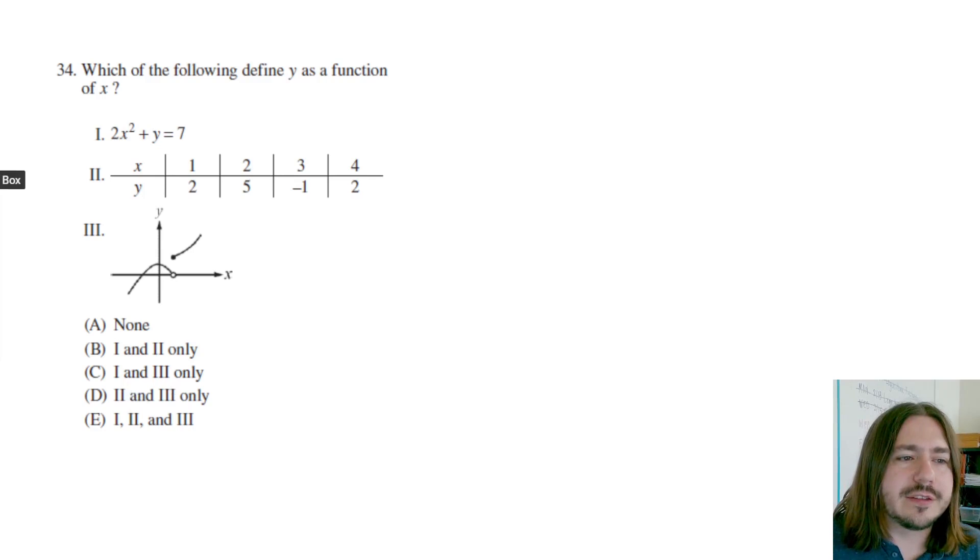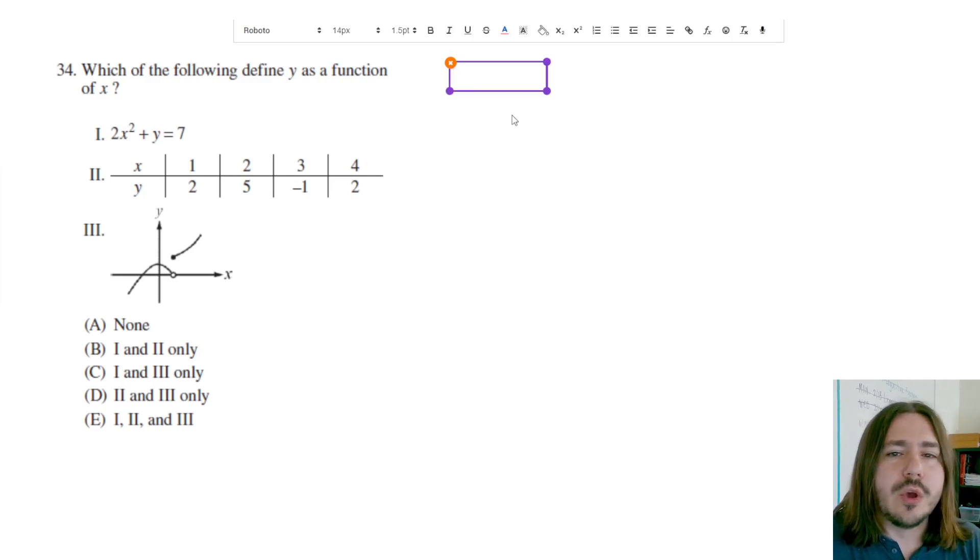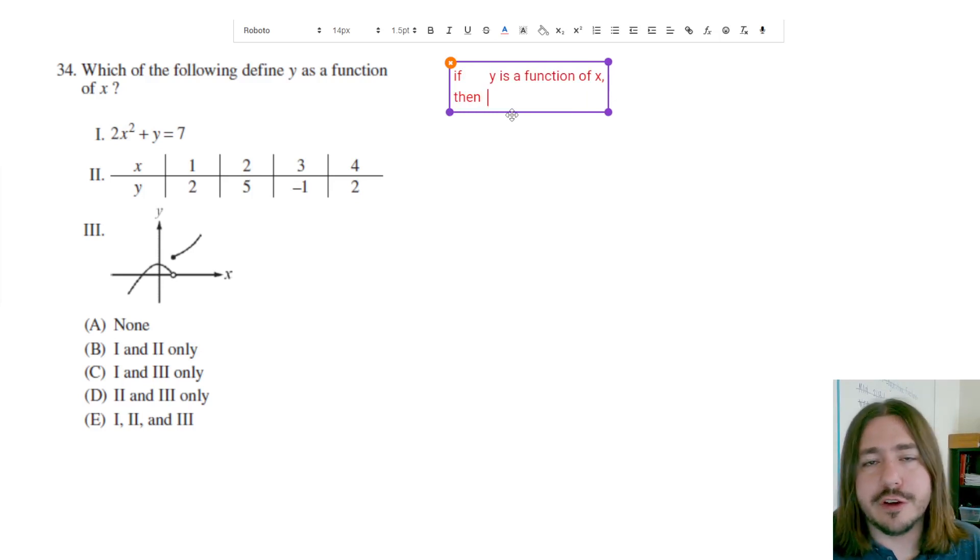Y as a function of x is really just a definition. If you understand the definition, this should be a pretty simple problem. If y is a function of x, what does it mean to be a function of x? It means that each input only has one output. In other words, for each value of x, you're only going to have one value of y that corresponds to it. So if y is a function of x, then each value of x corresponds to exactly one value for y.